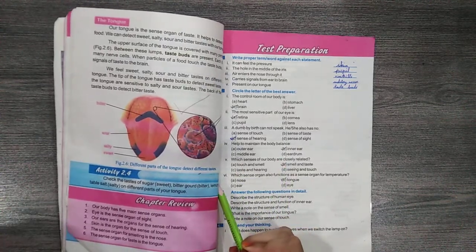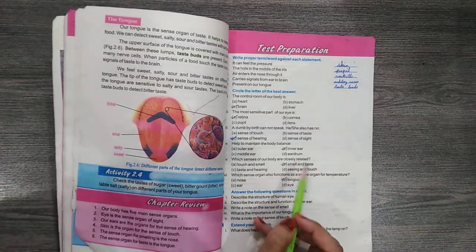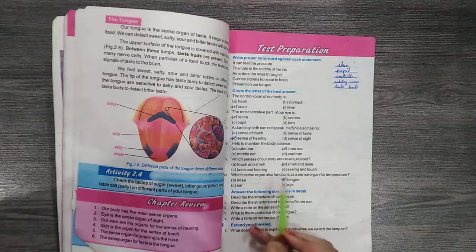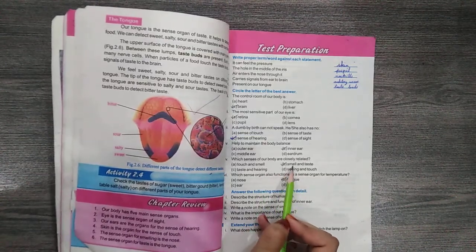Question number 5: Which senses of the body are closely related? A. Touch and smell, B. Smell and taste, C. Taste and hearing, D. Sense and touch - the answer is B. Smell and taste.